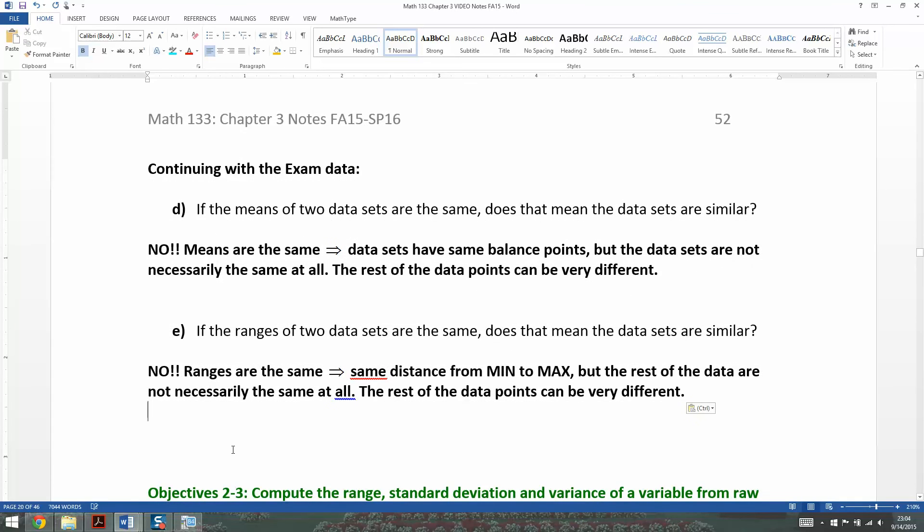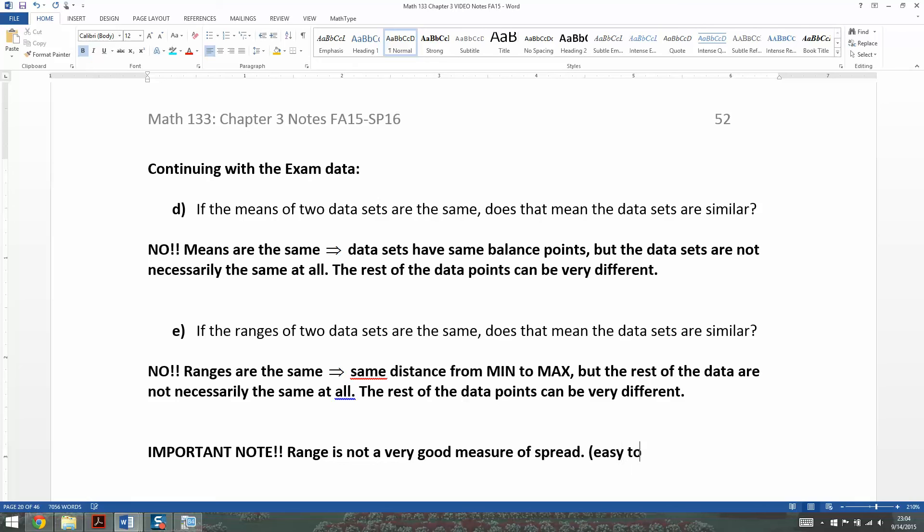If you know that the range is the same, that means the distance from the min to the max is the same. But the rest of the data are not necessarily the same at all. They can be very different. That means the important moral of the story is that the range is not a very good measure of spread. The range is easy to calculate, but it has a lot of problems. It doesn't tell us that much about the data, other than the distance from min to max.